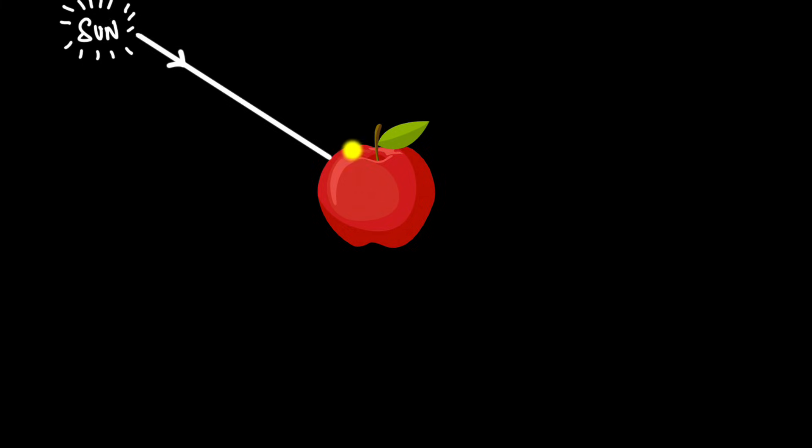Let's keep an apple outside on a sunny day in broad daylight so there's sunlight falling onto it. Remember that sunlight is white light, which is made of all the colors of the rainbow. What happens to the light once it falls on the apple? Well, some of the light gets reflected — a lot of it is red color, and that's why we see the apple as red. But what happens to the rest of the colors?